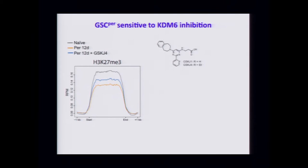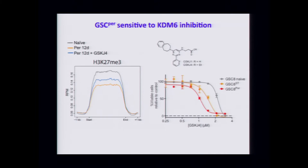KDM6 is the enzyme that removes K27ME3, and there's an inhibitor GSKJ4. It's not a perfect inhibitor, but it works well: if you look at naive cells compared to persister cells and then persisters treated with GSKJ4, the K27ME3 comes back up, so the drug blocks this demethylation effect. What was really striking is that the long-term persisters are very sensitive to GSKJ4 at very low concentrations, suggesting that the erasure of these repressive marks is essential for cells to transition into this drug-tolerant quiescent state.